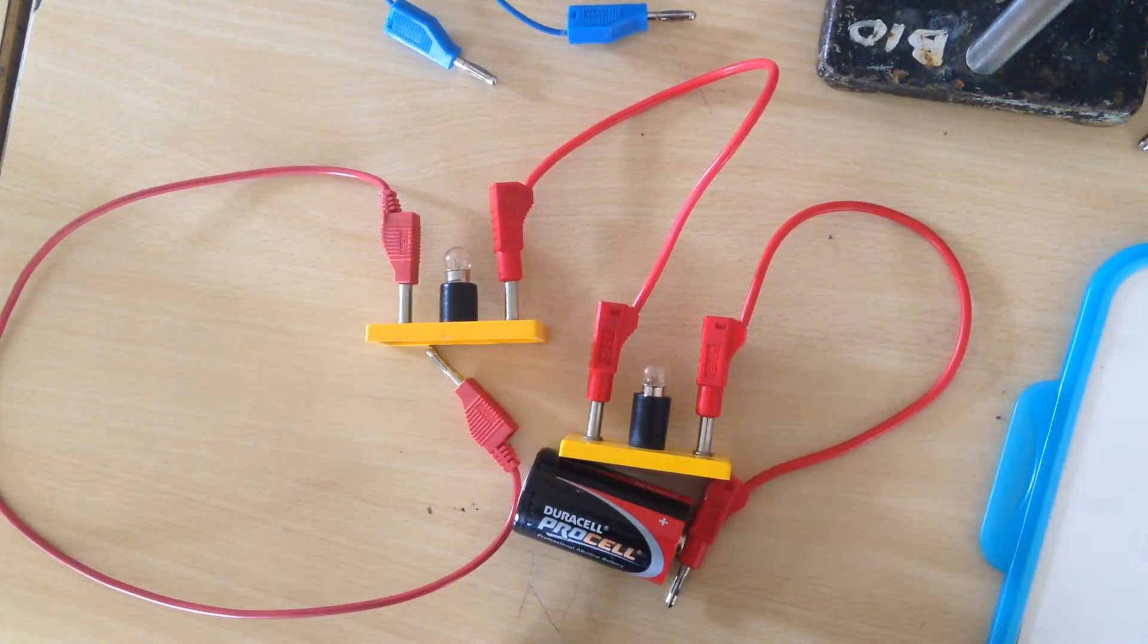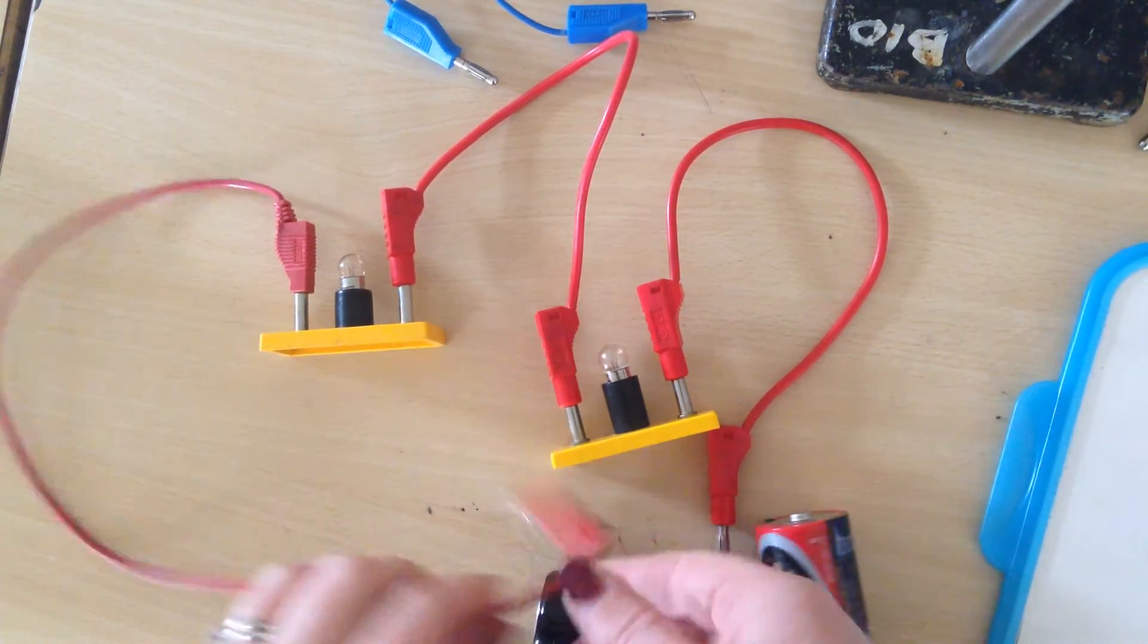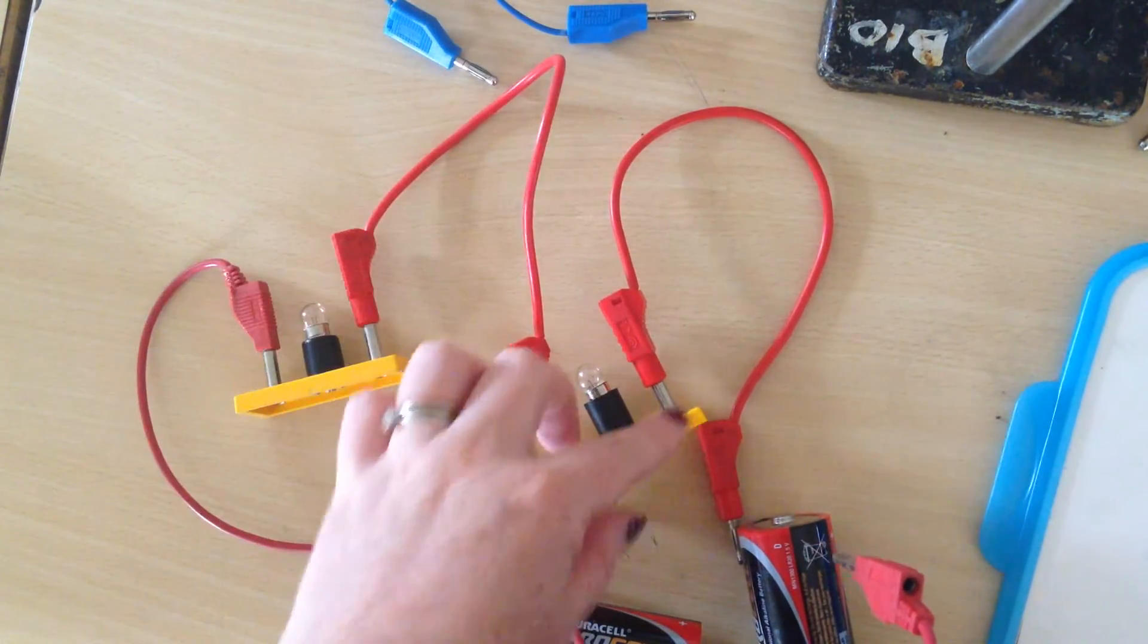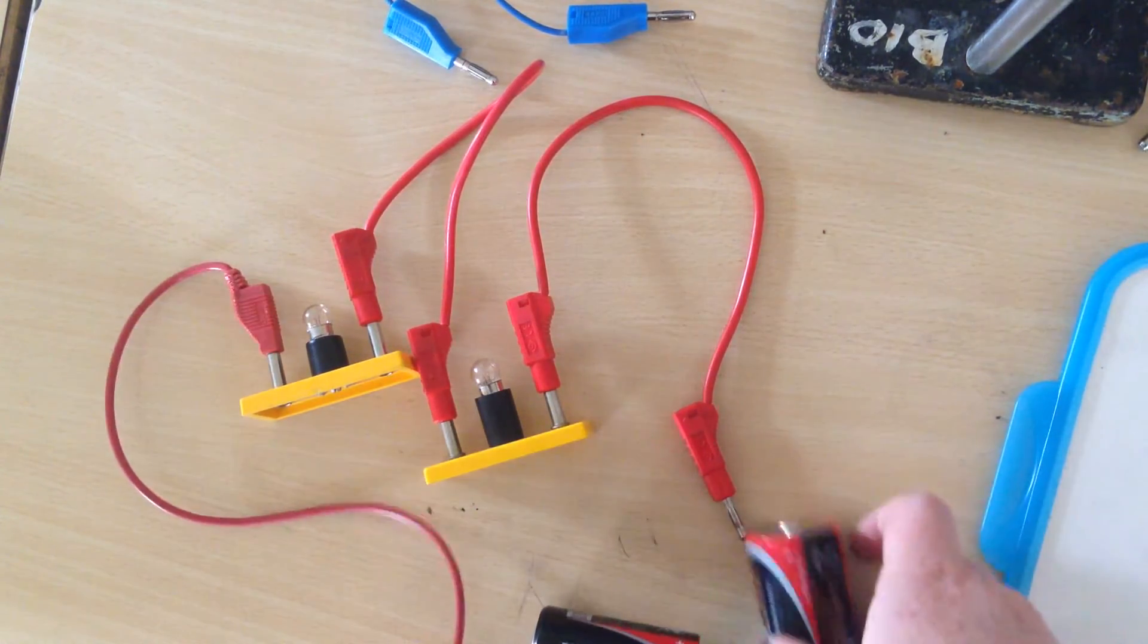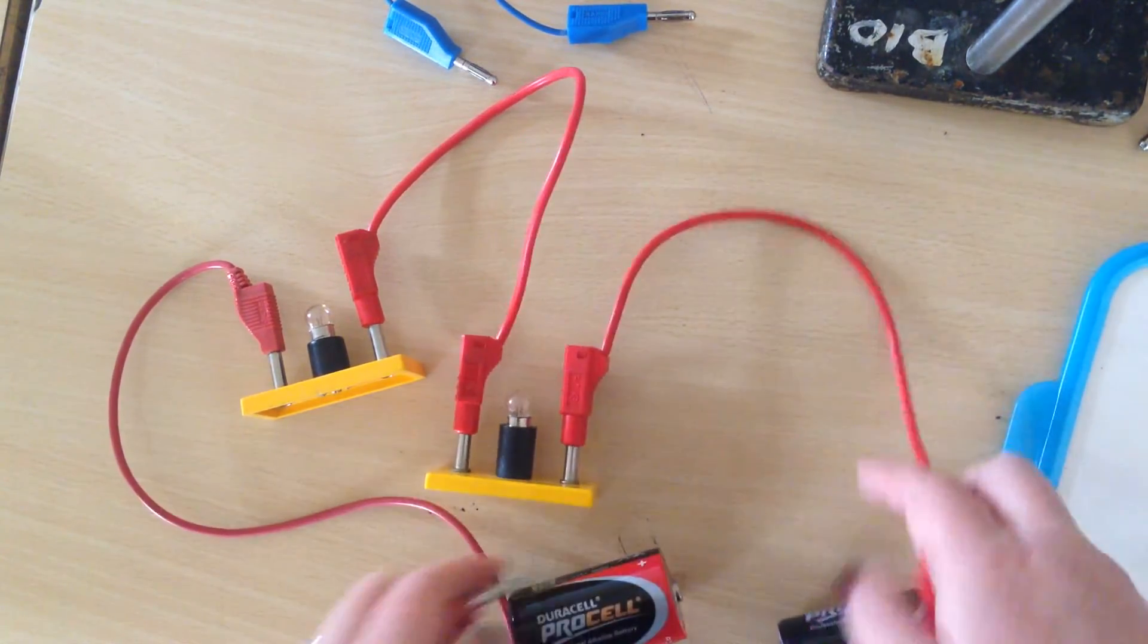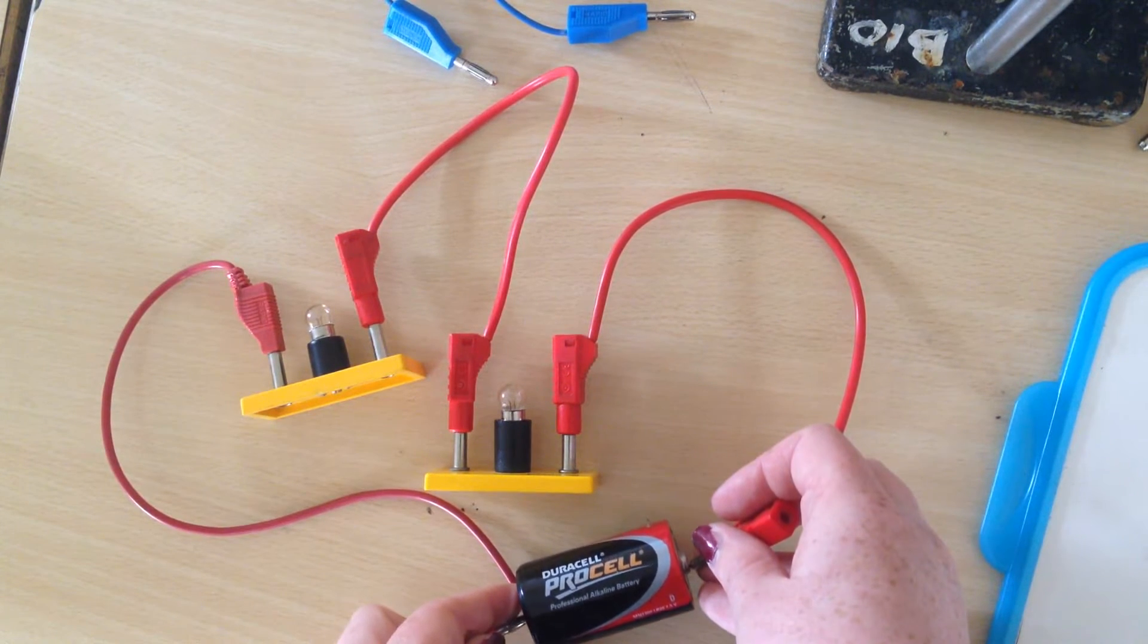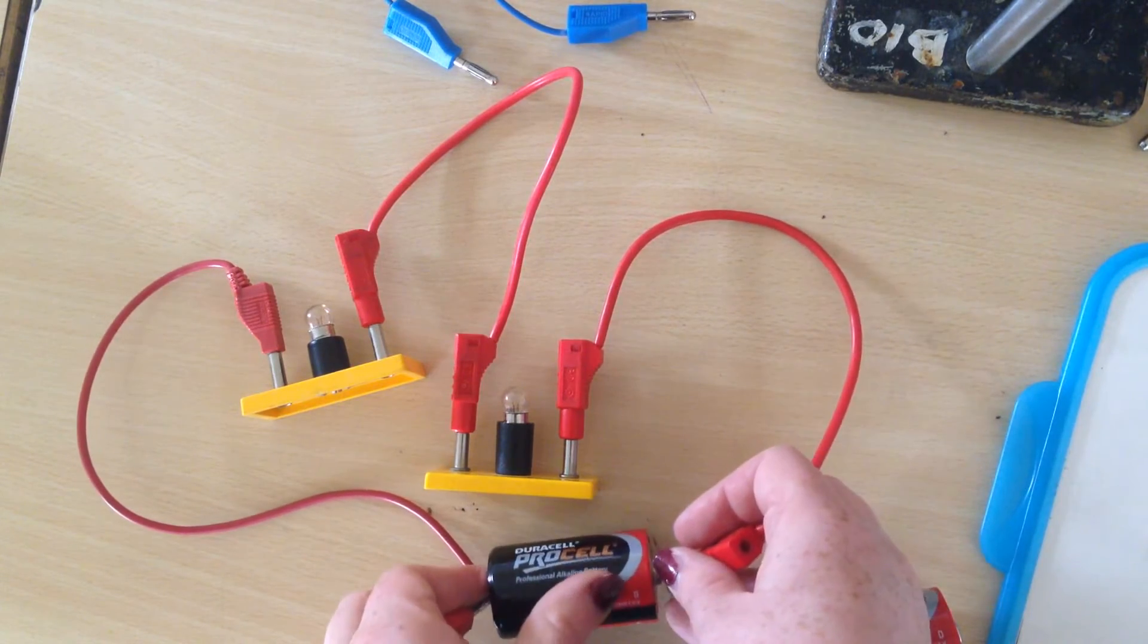So in a series circuit everything is in like one linear order. So here our circuit has two bulbs in. If we follow the path of the wires through, the series circuit doesn't have any corners or any edges in it. You'll be able to follow it through in one go. So these bulbs are both in series. If I attach them to the bulb you can see this lighting up. I've got the lights off in the lab to try and make this as bright as possible.